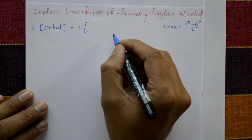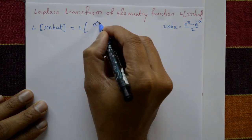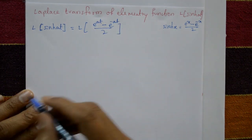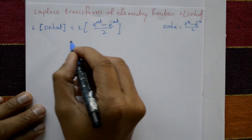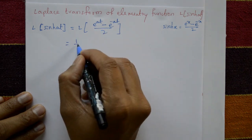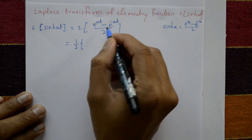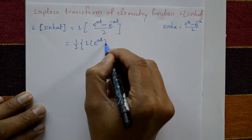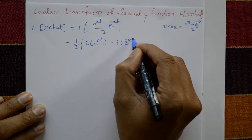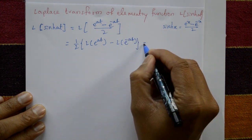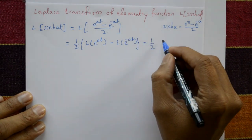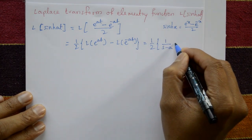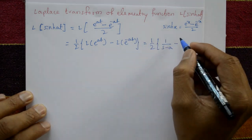Using this standard formula, sinh(at) = (e^(at) - e^(-at)) / 2. So Laplace of sinh(at) = (1/2) times [Laplace of e^(at) minus Laplace of e^(-at)], which equals (1/2) times [1/(s-a) minus 1/(s+a)].